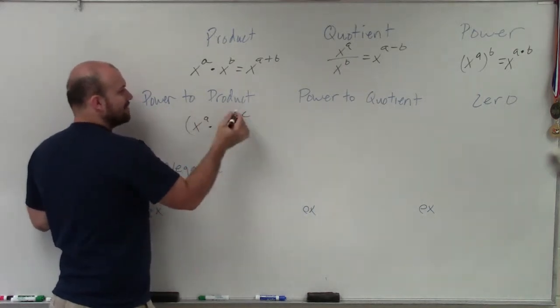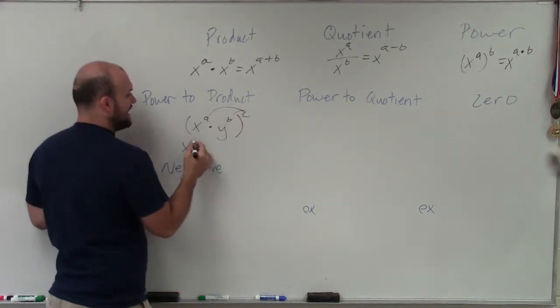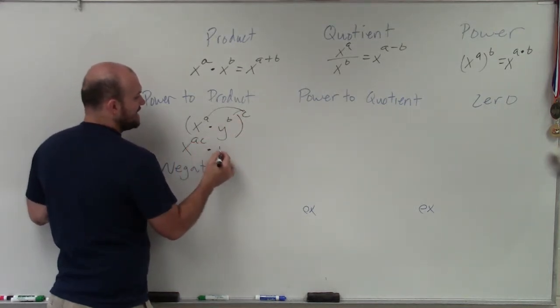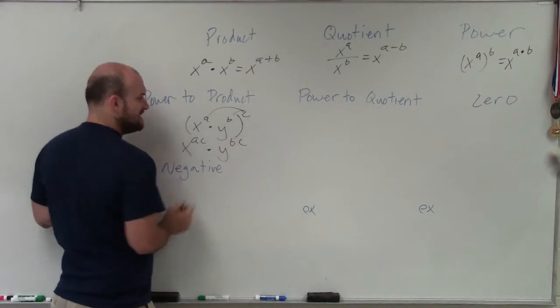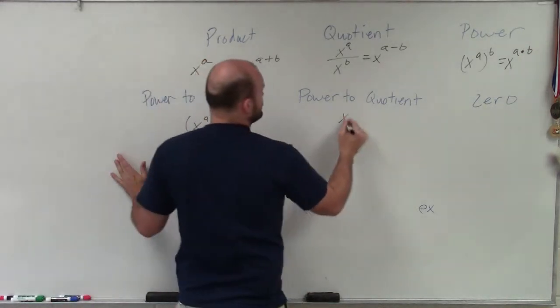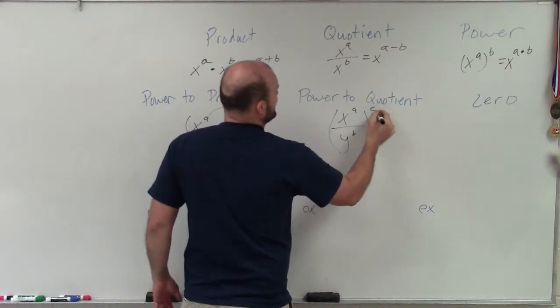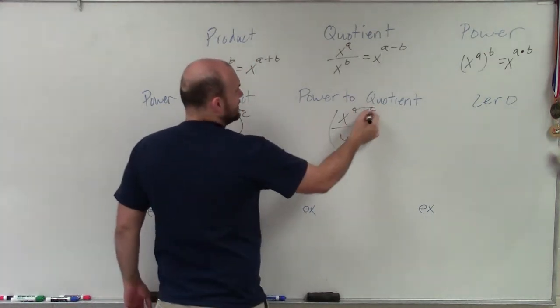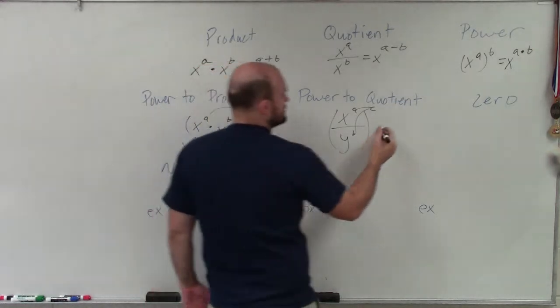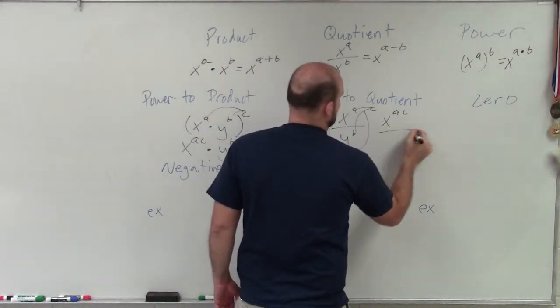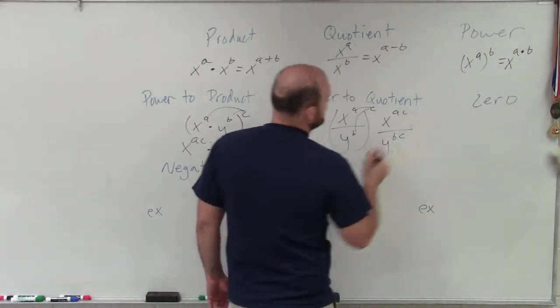Then what the power to product rule tells us is this power needs to be distributed to both those terms. So I have x to the ac times y to the bc. And that works for the power to quotient rule as well. If I have x to the a over y to the b, and that's raised to the c power, again, the power goes to the term in the numerator as well as the denominator. So I have x to the ac divided by y to the bc.